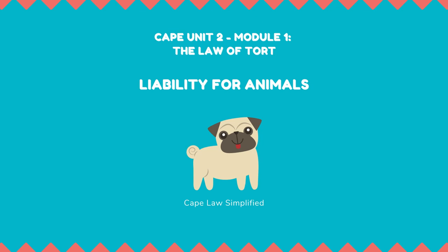An important exclusion from liability in negligence is the rule from Searle v Wall Bank, which states that the occupier of premises adjoining a highway is under no duty to users of the highway to prevent his domestic animals, not known to be dangerous, from straying onto the highway and causing accidents there. At common law, there is no duty upon the owner of land to maintain a fence or other obstacle around the property to keep his animals in. And that concludes the topic of liability for animals.